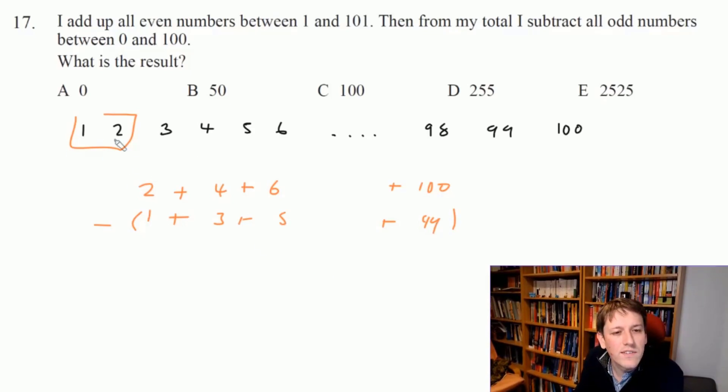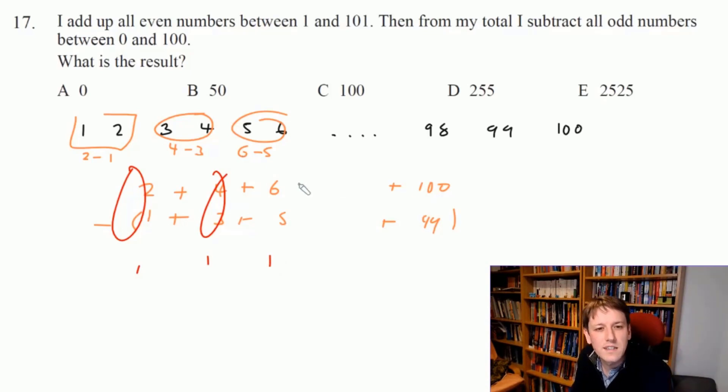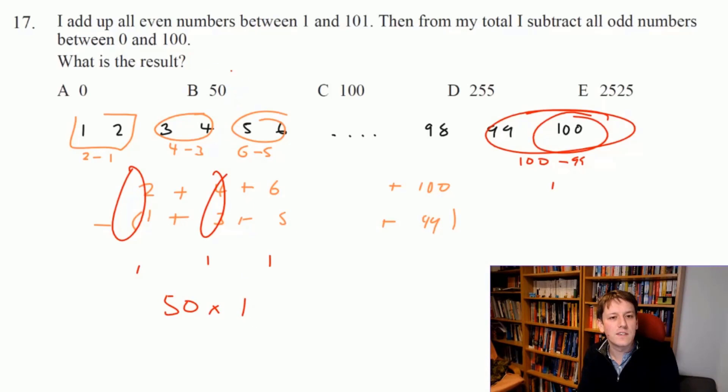So you can think of it like I'm going to be doing 2 minus 1, and then I'm going to be doing 4 minus 3, and I'm going to be doing 6 minus 5, and adding all of those together. 2 minus 1 is 1, 4 minus 3 is 1, 6 minus 5 is 1. And so if I keep doing that, I'm going to be adding together all of these pairs of numbers, all of these ones. How many pairs of numbers are there between 1 and 100? Well, there are 50, so my last pair is going to be also 100 minus 99, which is 1. So I'm just going to end up with 50 lots of 1. And so the answer is B, 50.